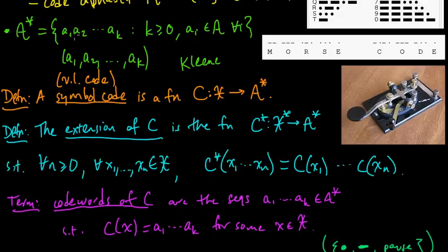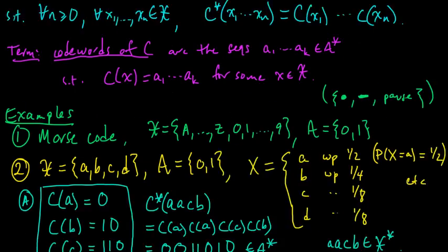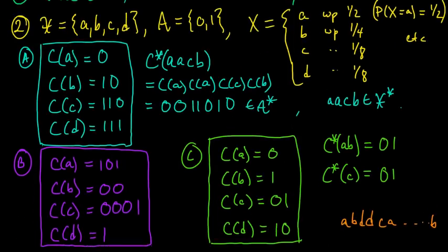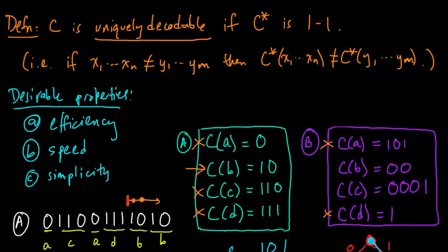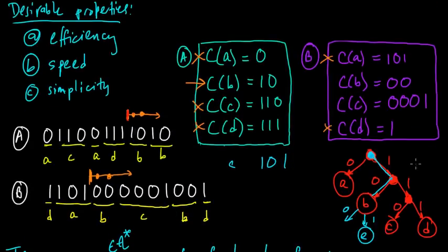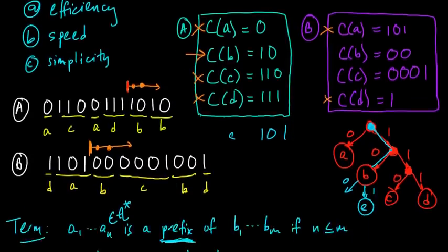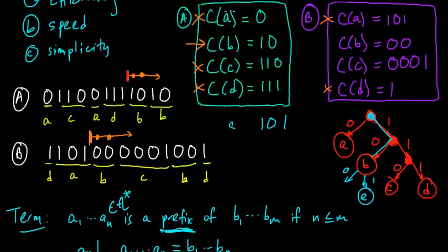So those sequences of symbols, those strings, all of them make up the set A star, and the ones that C maps to are the codewords. And then we looked at some examples, we had our A, B, and C, we defined unique decodability which was a key property, and then we started looking at these things: efficiency, speed, and simplicity, and we arrived at the notion of a prefix code, which was just a very nice type of code that we found.